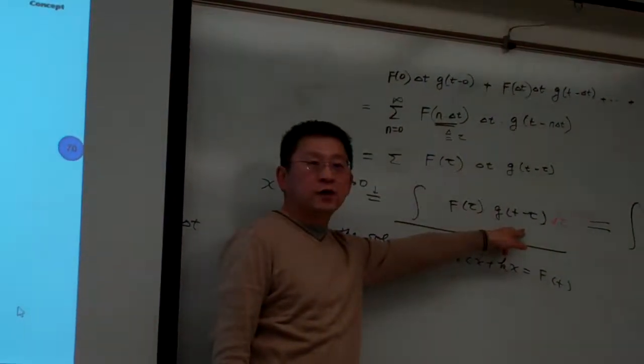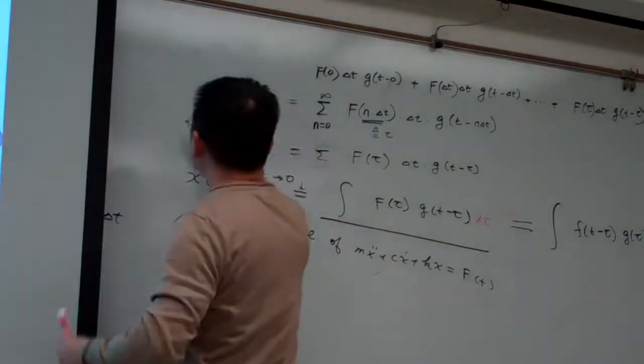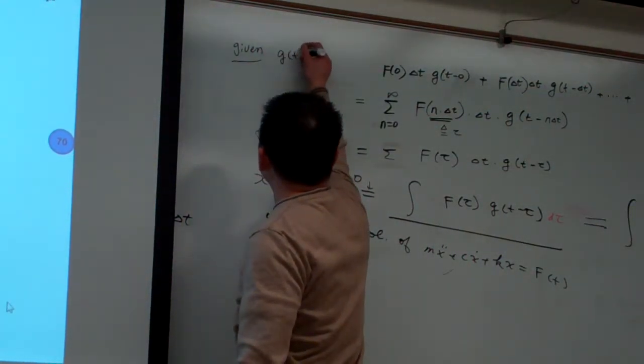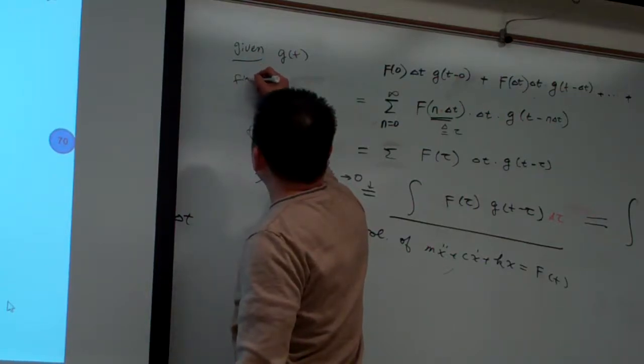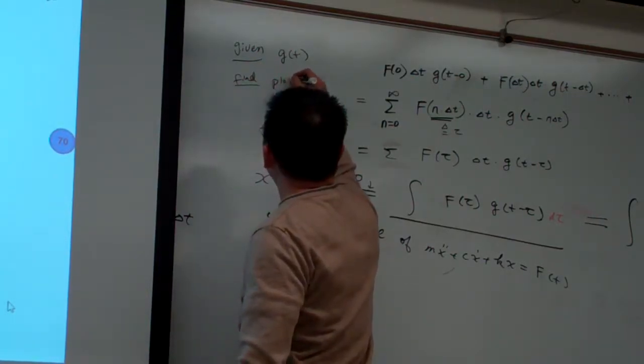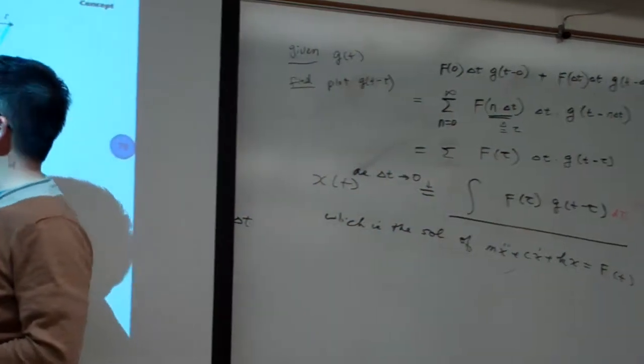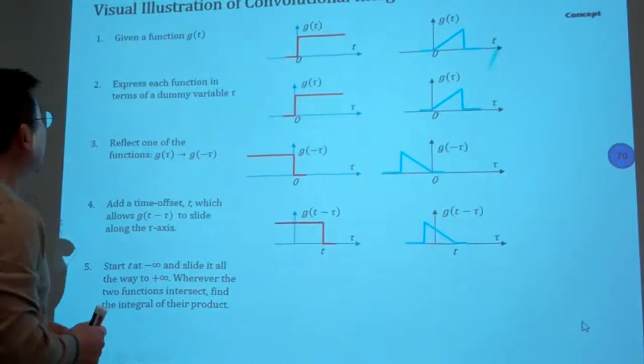If we are given G(T), so for this demonstration is this. We are given any function G(T) and then we are going to find, plot G(T minus tau). Basically that is a step demonstrating in this here. So the step is this. We are given a function G(T) like this.